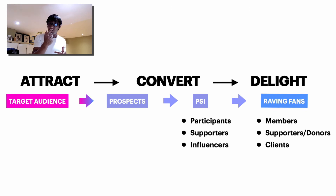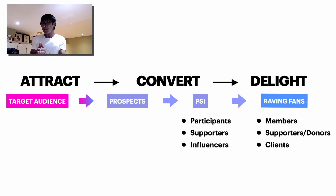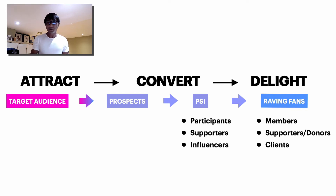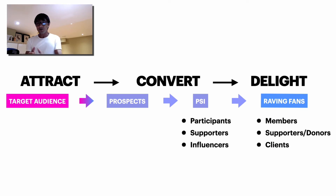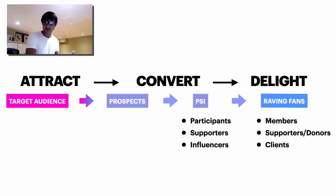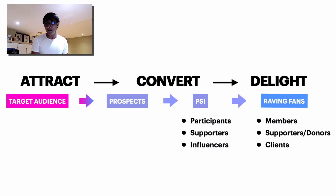You have to convert. So you want to convert the prospect to PSI — a term I use a lot through my process. That stands for Participants, Supporters, and Influencers. And you want to delight your members, supporters — could be donors, depending on your organization, could be a client — and turn them into raving fans. That's the marketing process you have to think about before we do this process.